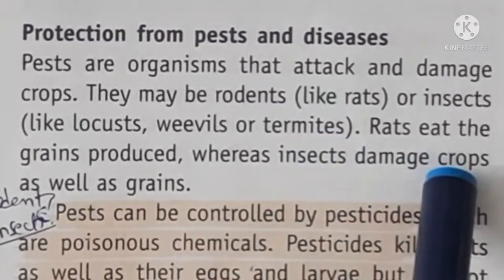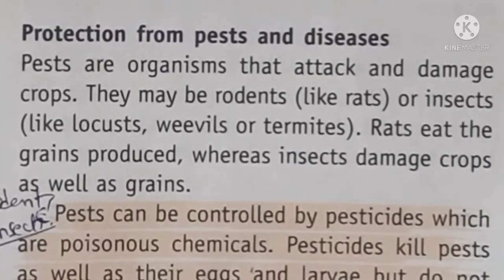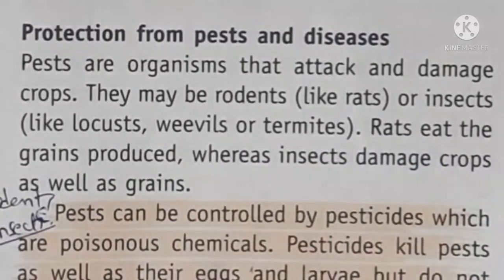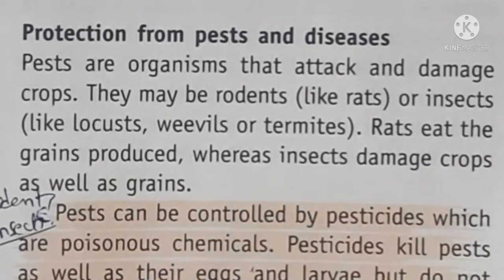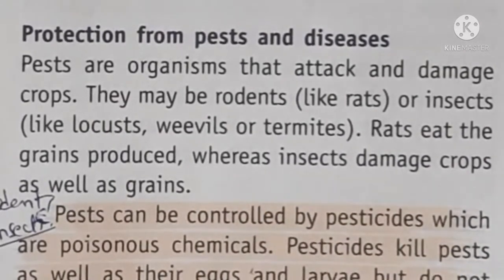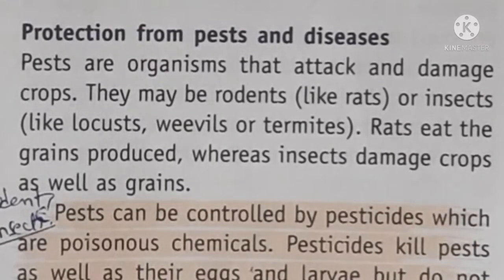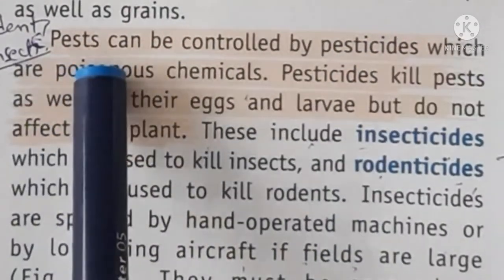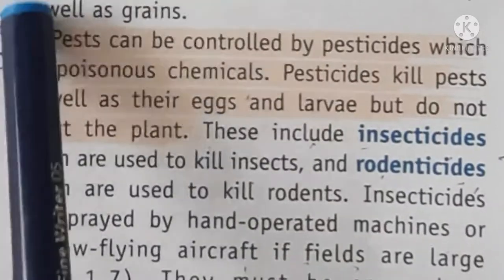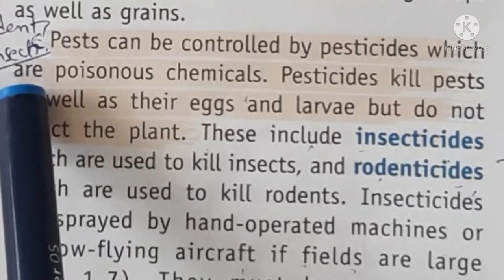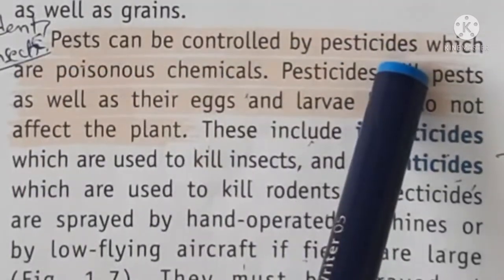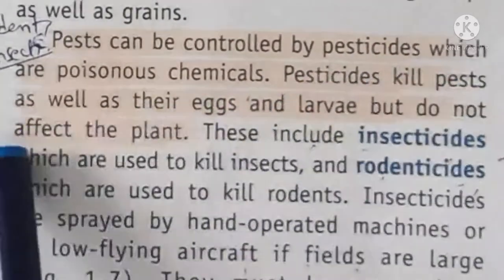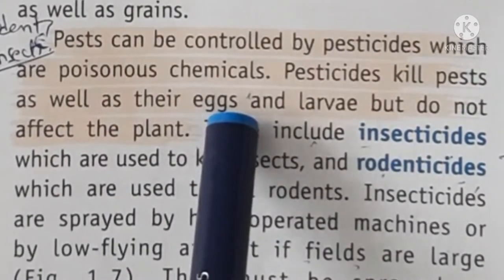Insects can damage crops while they are growing in the field, and can also damage grains in storage. To control pests like rodents and insects, we use pesticides — poisonous chemicals like weedicides. Pesticides kill pests as well as their eggs and larvae, but they do not affect the plants. This includes insecticides, which are used to kill insects, and rodenticides, which are used to kill rodents.